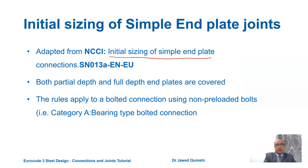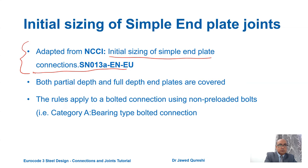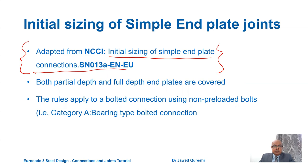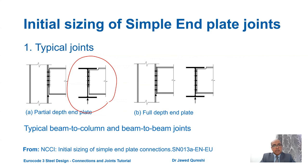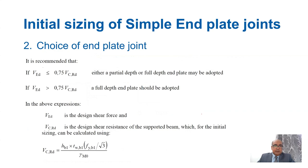For initial sizing I will be using the NCCI guide on initial sizing of simple end plate connections, which you can find by Googling it. Both partial and full depth end plate joints are covered. These design rules apply only to bolted connections using non-preloaded bolts, which are category A bearing type bolted connections. On the left is a partial end plate joint and on the right is a full depth end plate joint.